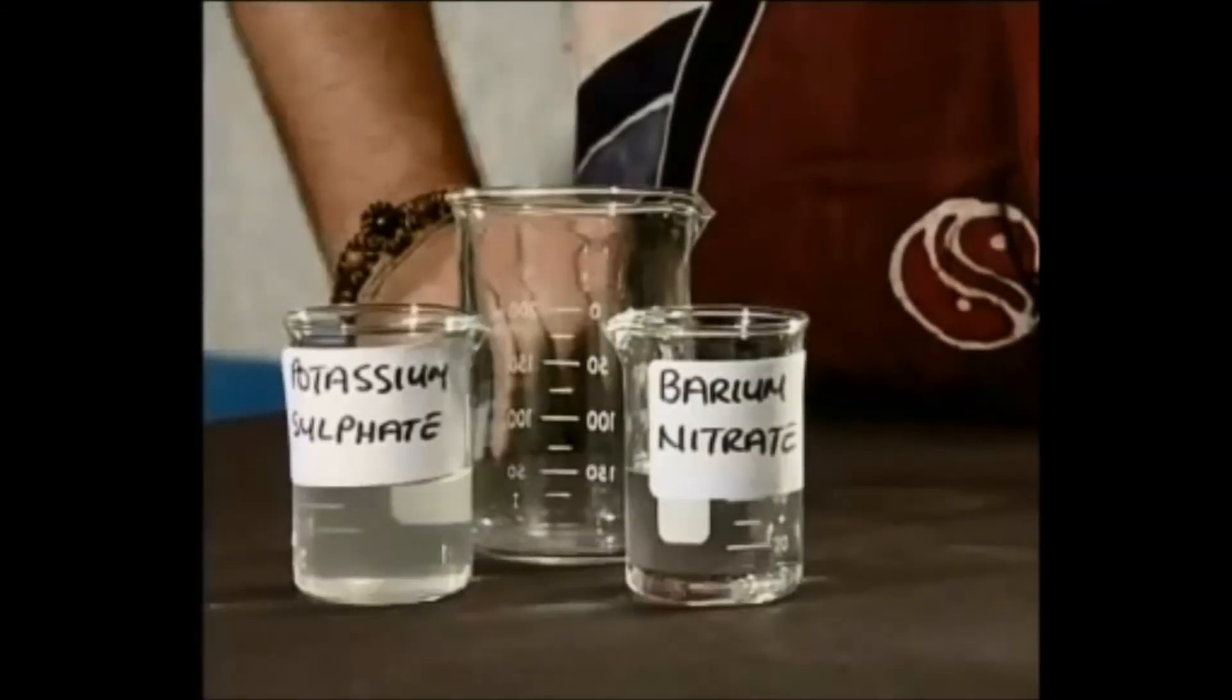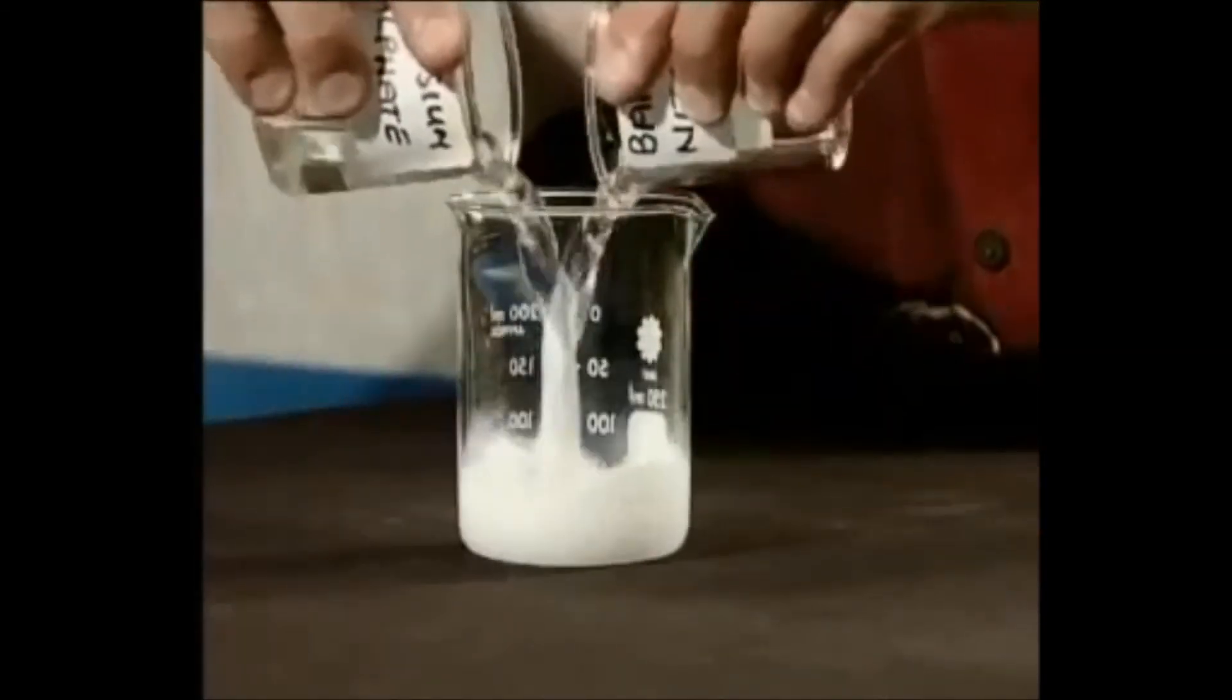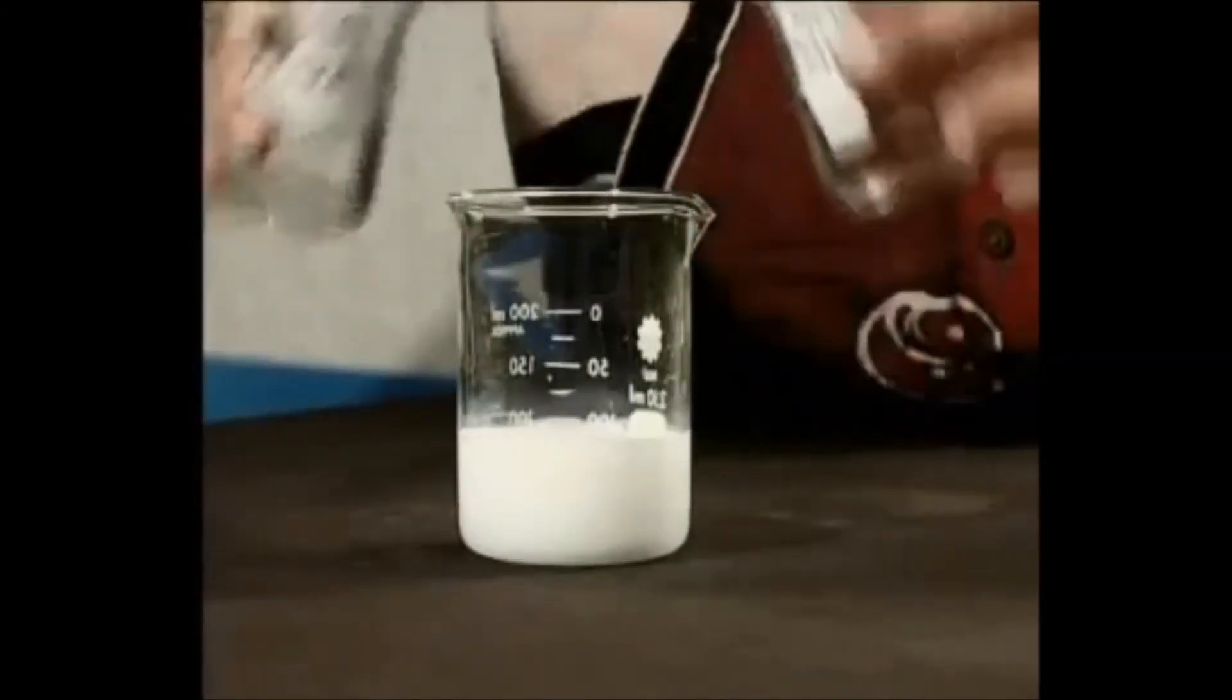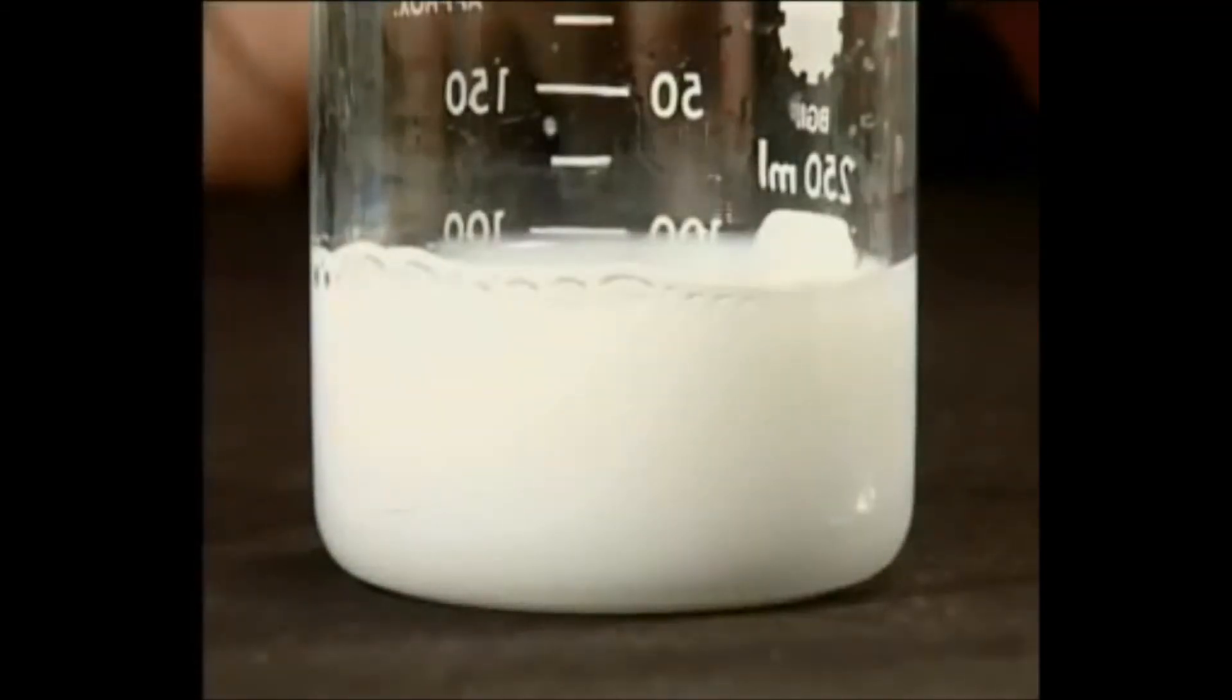Now we need to check if this really works by doing an experiment. Here we have the solutions of barium nitrate and potassium sulfate. We will now add them together and watch what happens. Do you see the white precipitate of barium sulfate forming?